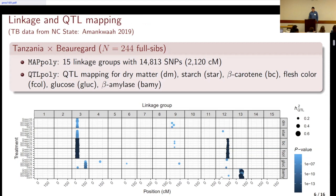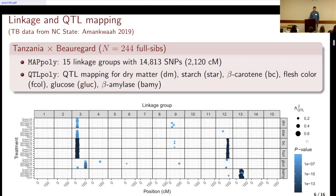The other population we used was the Tanzania by Beauregard population — another map built with MAPpoly, and QTLpoly was used for detecting the QTLs. Traits include dry matter, starch, beta-carotene, flesh color, glucose, and beta-amylase. Beta-amylase escapes the trend of having QTLs on chromosomes 3 and 12 — we have it on chromosome 13 instead. All these QTLs individually explain a lot of the phenotypic variation, up to R² of 0.6. So we decided to pick some of these QTLs to design CAST markers and test how they would perform in a multi-parental population.